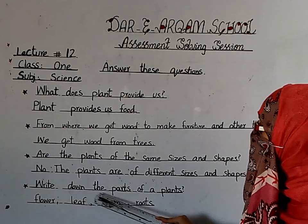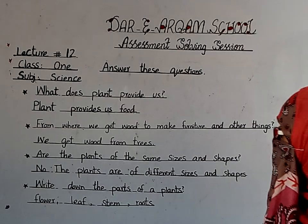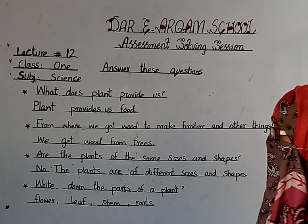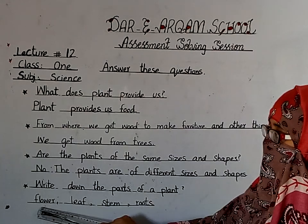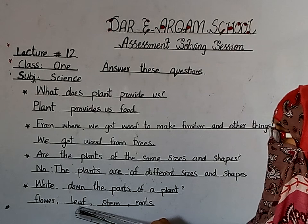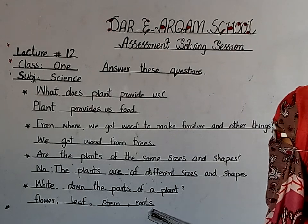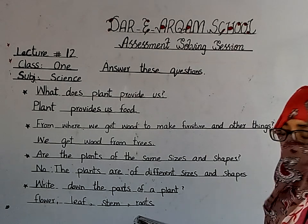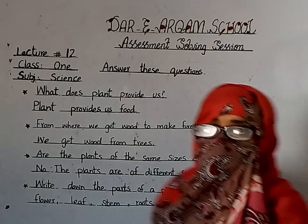Write down the parts of a plant. The parts of a plant are: flower, leaf, stem, and roots. These are the parts of a plant.